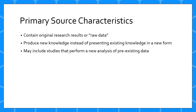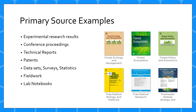Primary sources contain original research results or raw data. They produce new knowledge instead of presenting existing knowledge in a new form, and they may include studies that perform a new analysis on pre-existing data. The main example of a primary source in the sciences is the primary research article, which reports on the results of an experiment conducted by the author.